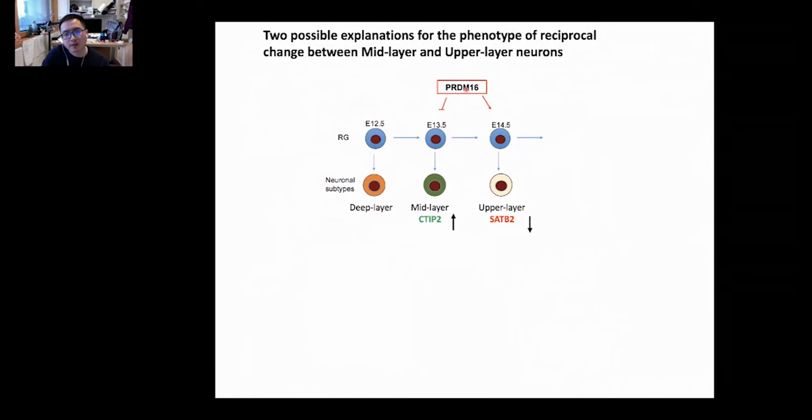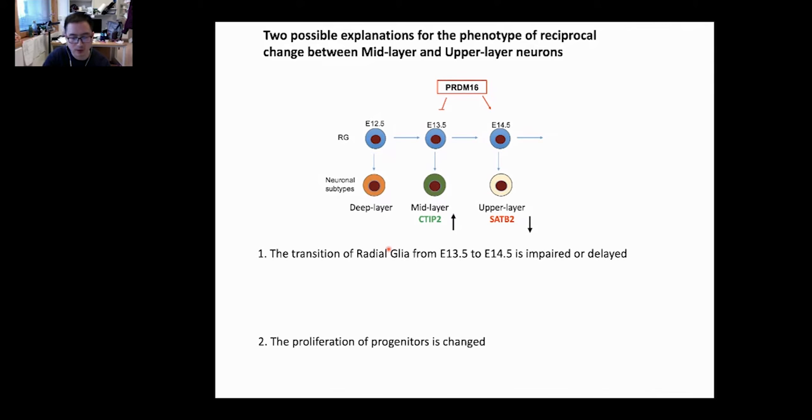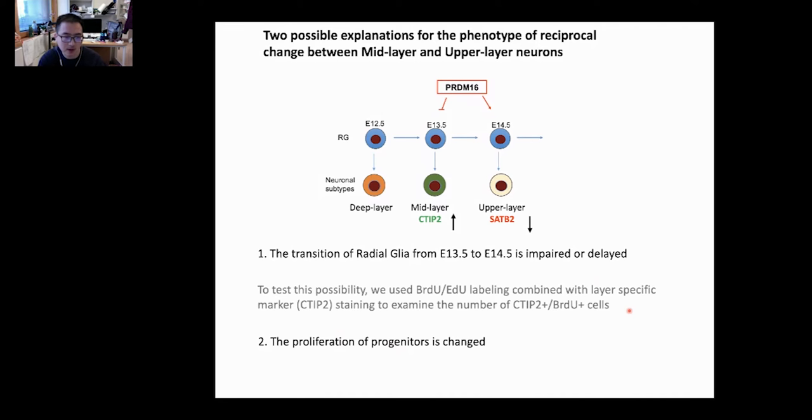Considering the fact that PRDM16 is specifically expressed in radial glia, while the phenotypes are observed in the daughter neurons, we raised two possibilities. The first is that the transition of radial glia is impaired or delayed. The second possibility is the proliferation of the progenitor cells is changed. To test the first possibility, we use BrdU-EdU labeling combined with a layer specific marker, CTIP2, to examine the double positive cell number.